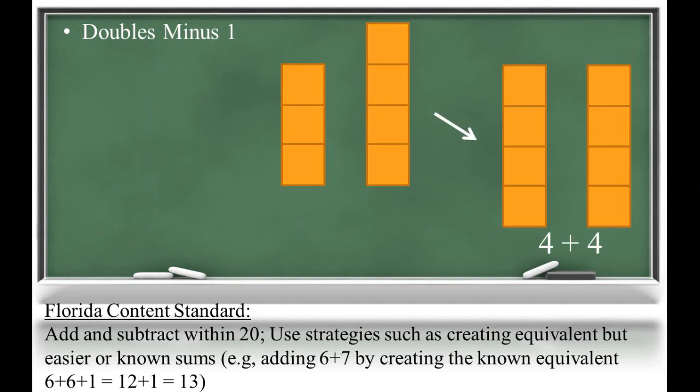If you thought of the double four plus four, you can then subtract one, so your process of thinking will be four plus four minus one, which is the same as eight minus one is seven.